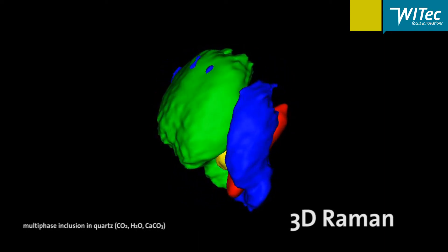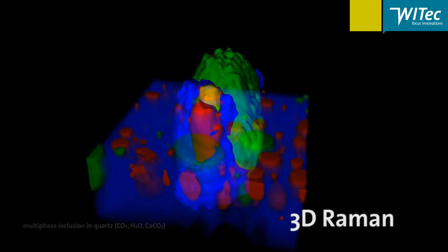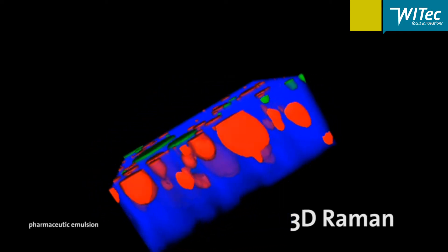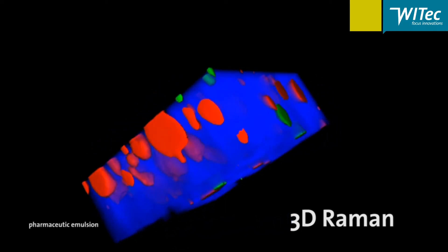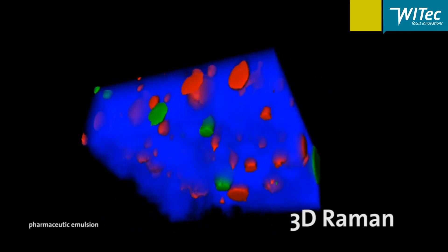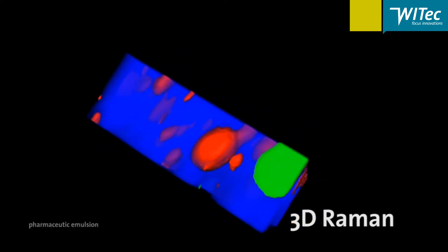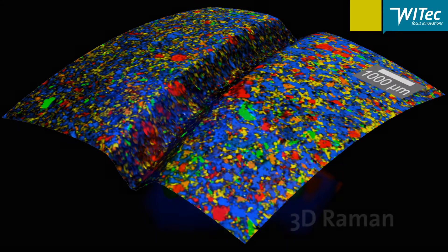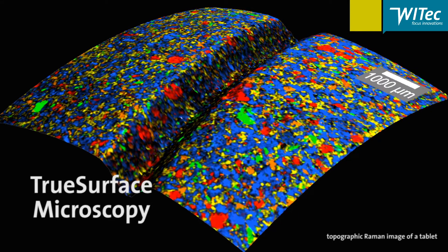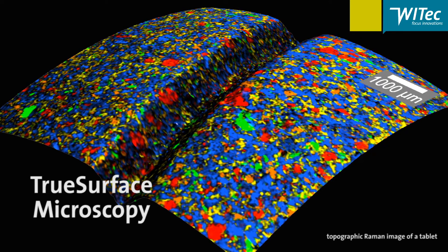Correlative Raman imaging microscopy can combine the sensitivity and resolution of 3D chemical characterization with other techniques such as optical profilometry for looking at roughly textured or heavily inclined samples.